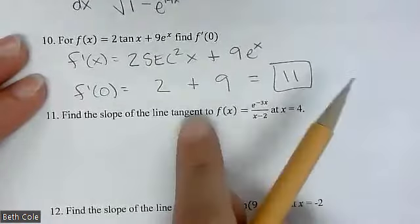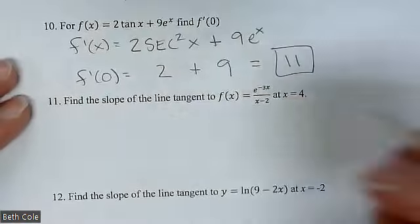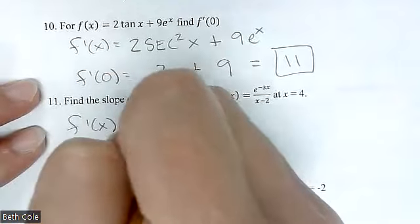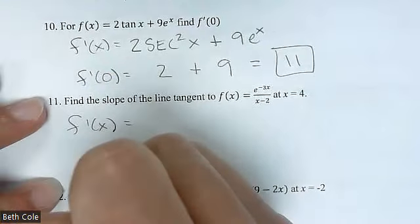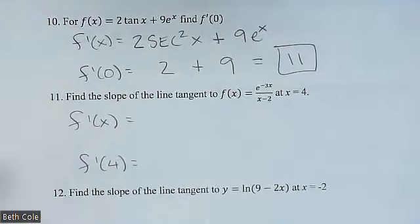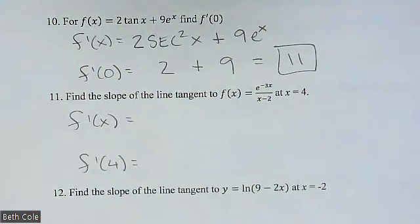I'll show you — I'm going to do that again. We're going to get the derivative, F prime of X, and then plug in four. If you write them separately like that, you won't make a linkage error. So just set it up and then go fill it in.